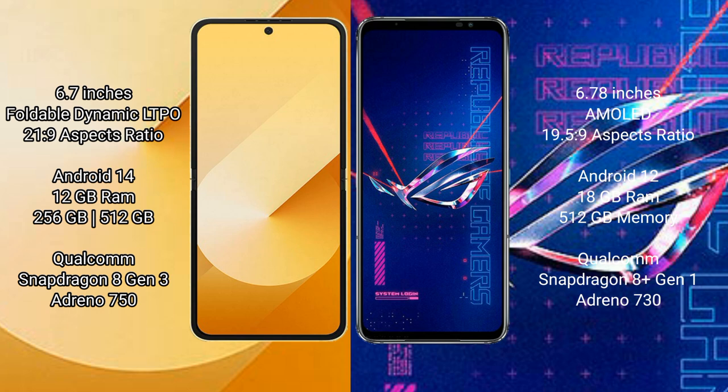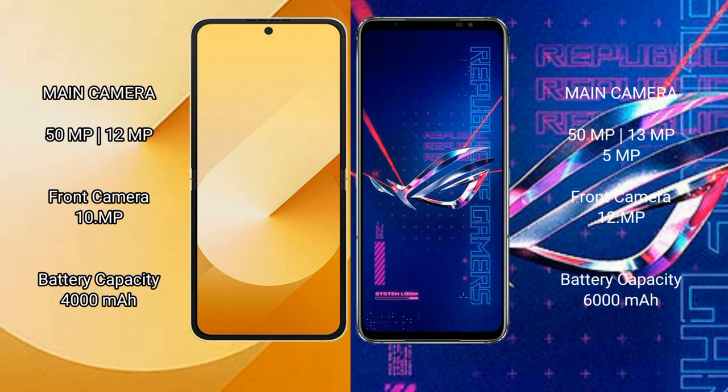The Samsung Galaxy Z Flip 6 comes with 12GB RAM and 256GB or 512GB internal storage, a Qualcomm Snapdragon 8 Gen 3 processor, and GPU Adreno 750. The Asus ROG Phone 6 Pro comes with 18GB RAM and 512GB internal storage, a Qualcomm Snapdragon 8 Gen 1 processor, and GPU Adreno 730.